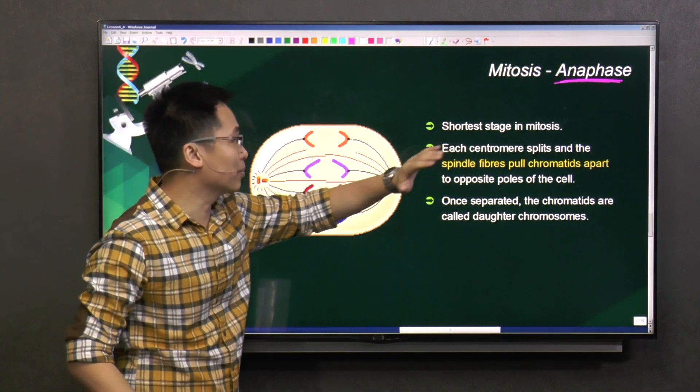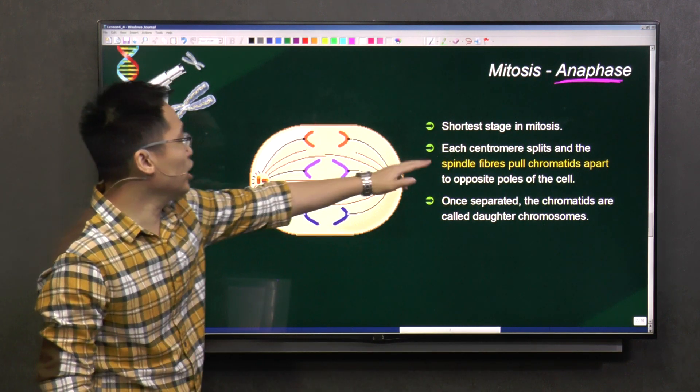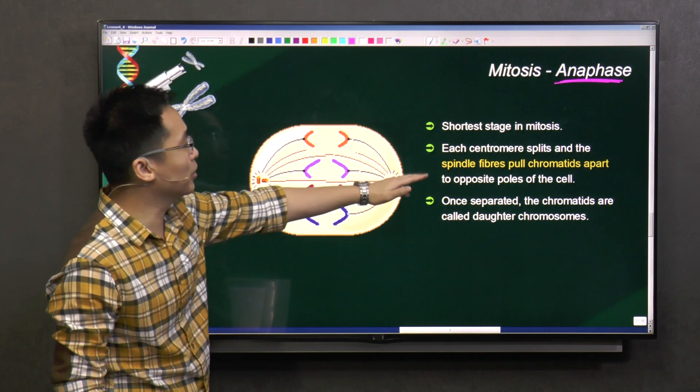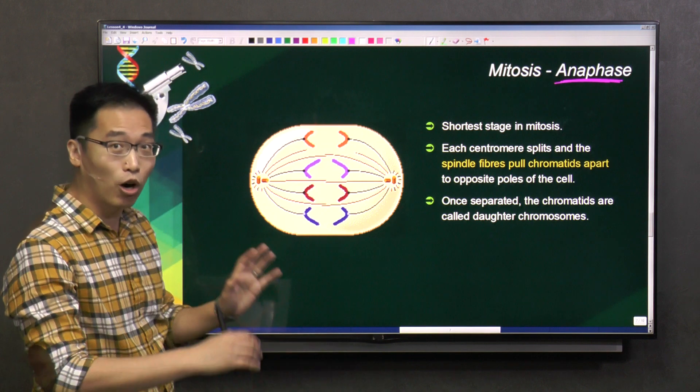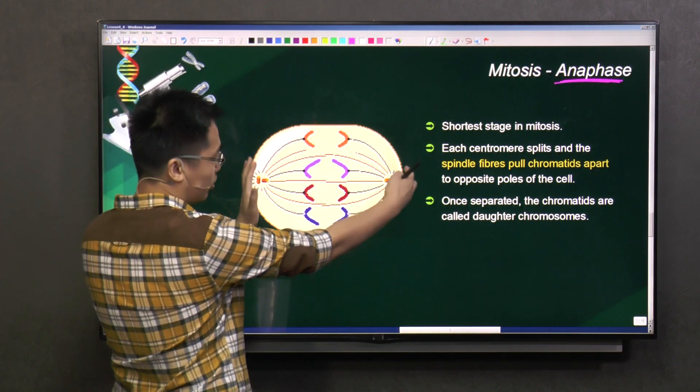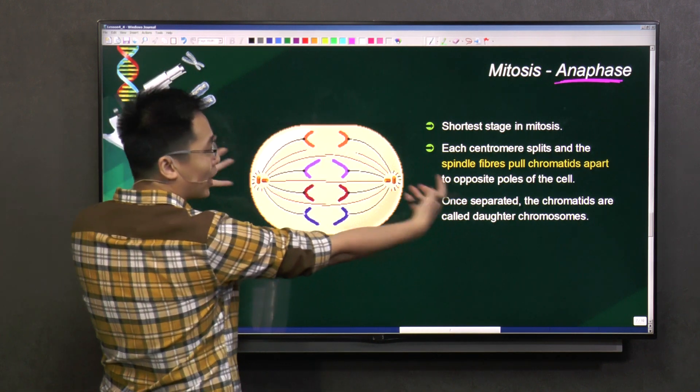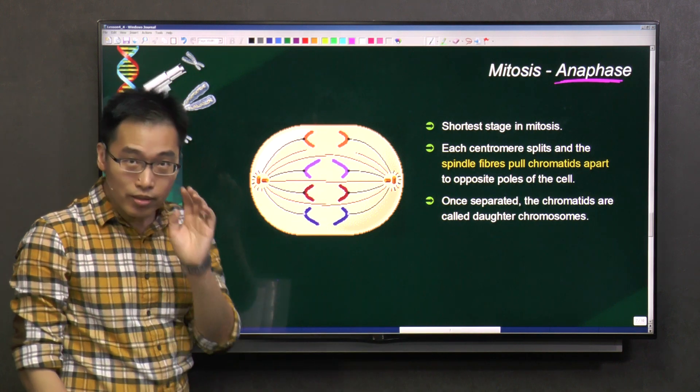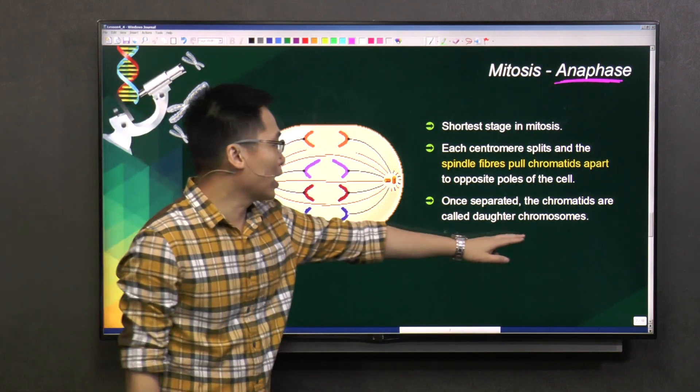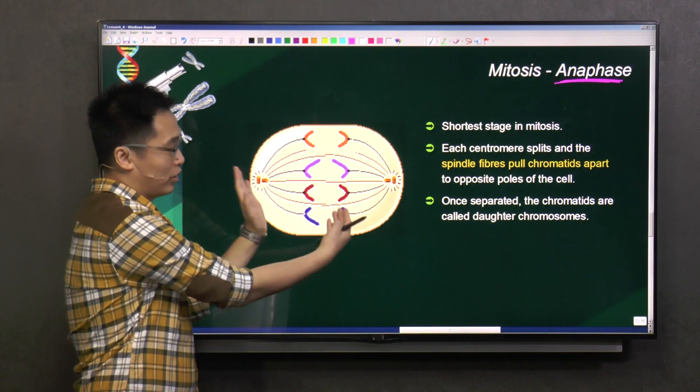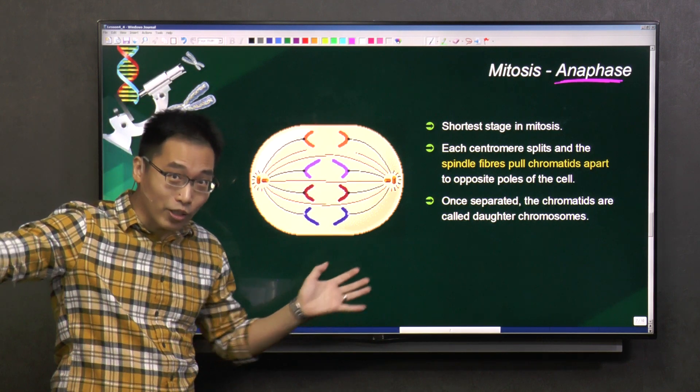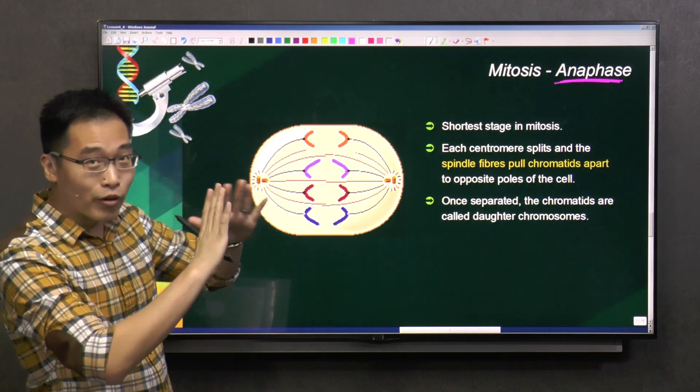So this is the shortest stage in mitosis and this is where each centromere splits and the spindle fibers pull the chromatids apart to opposite poles of the cell. Remember poles, now they are being pulled apart away from the equator. Once separated, the chromatids are now called daughter chromosomes. Now for the first time, we have the twins separated. No more together anymore.